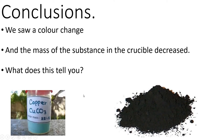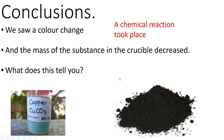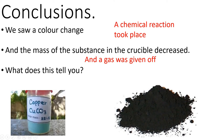So what does this tell us? A colour change tells us that a chemical reaction has taken place. And the mass of the substance in the crucible decreasing means a gas was given off. This goes back to the starter question about the log and the ash. The reason the mass of the solid is less afterwards is because a gas has been given off. It said in the video that we form carbon dioxide, so this will be lost to the atmosphere, meaning the solid will weigh less than what we had at the start.